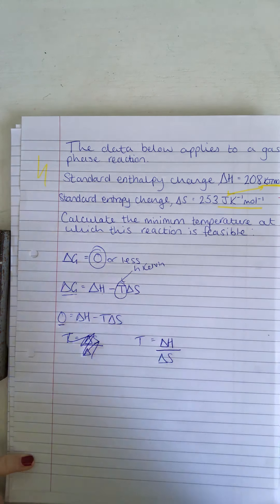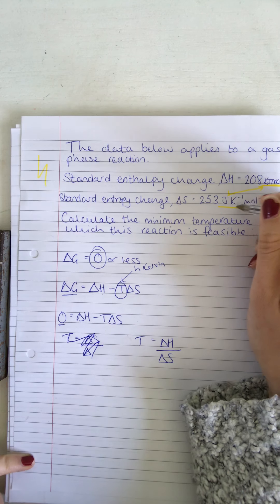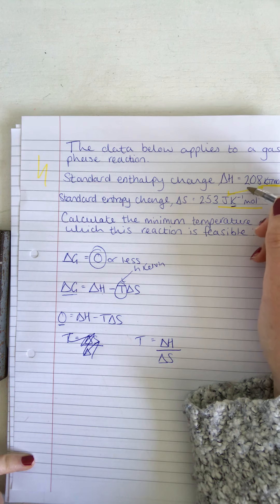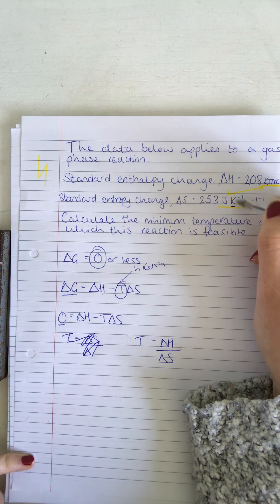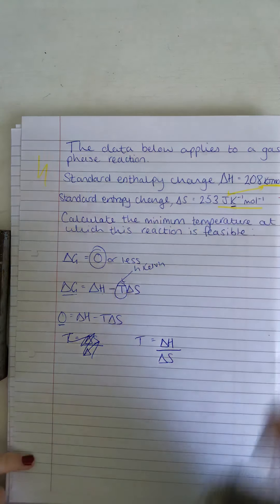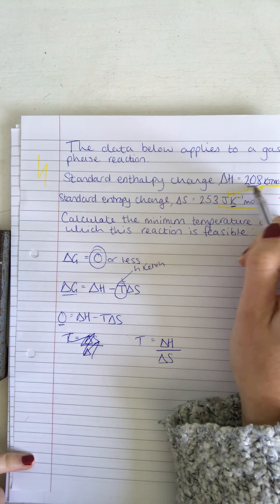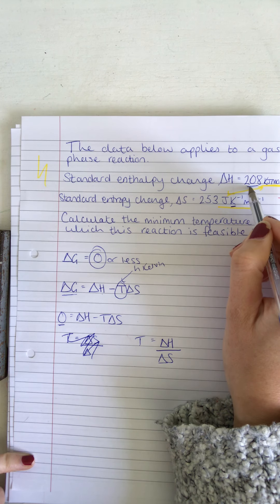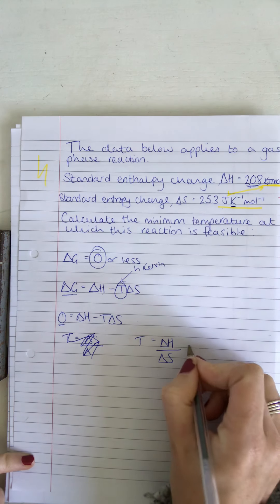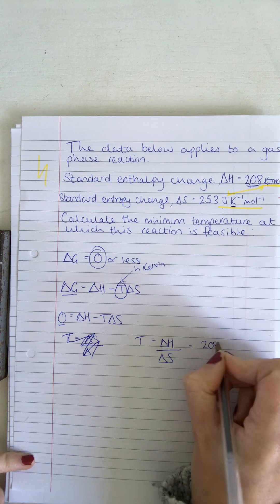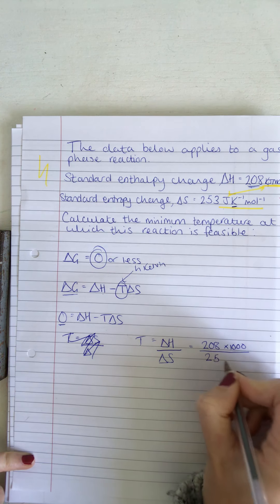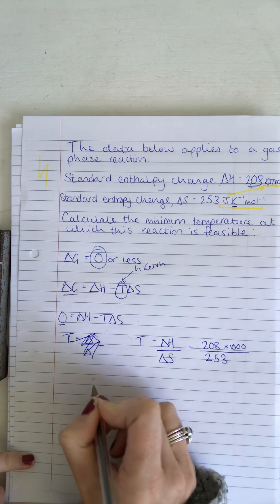So entropy is in joules per Kelvin per mole, so we want to put this into the same unit because temperature is measured in Kelvin. Therefore we're going to multiply our enthalpy change by a thousand to put it from kilojoules into joules. Okay, so that equals 208 times a thousand divided by 253.